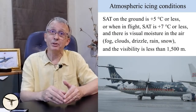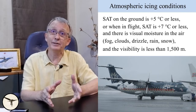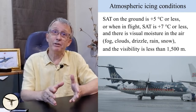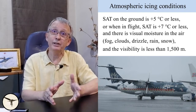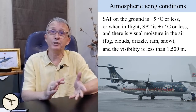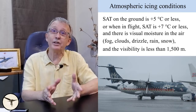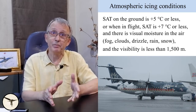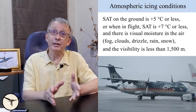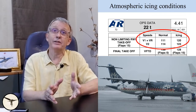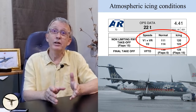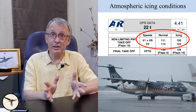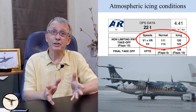When static air temperature on the ground is +5°C or less, or when in flight the temperature is +7°C or less, and there is visible moisture in the air — like fog, clouds, drizzle, rain, or snow — and visibility is less than 1,500 meters, then we have atmospheric icing conditions. Since ice accumulation on the wing can reduce the lift coefficient and induce stall at a lower angle of attack than normal, the takeoff speeds V1, VR, and V2 are increased. In this example, all takeoff speeds are increased by 9 knots.